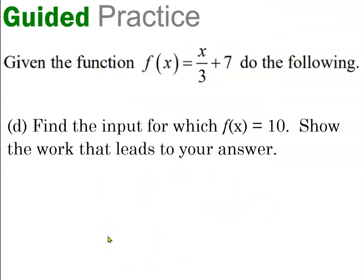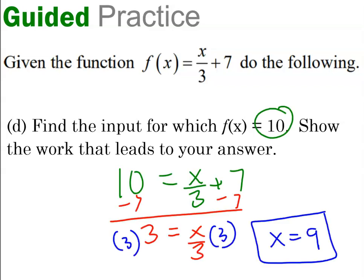Why don't you try finding an input when given an output on your own? Pause the video and try question d. Let's see how you did. Remember, 10 is the output, so it goes on the left-hand side of the equation. You need to use your inverse properties to work backwards to figure out what the input was. And the input was 9.